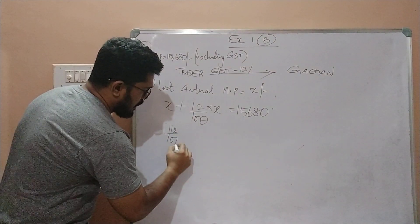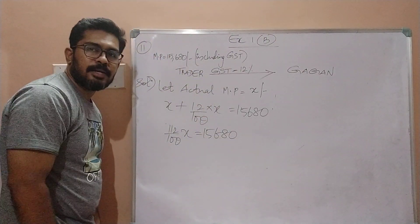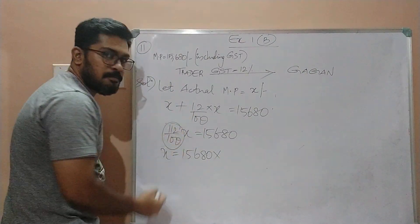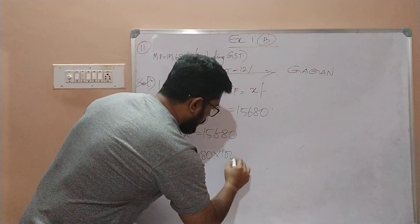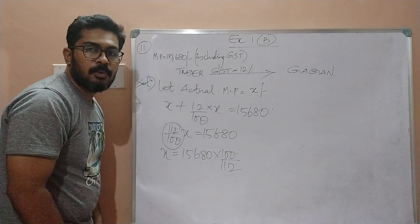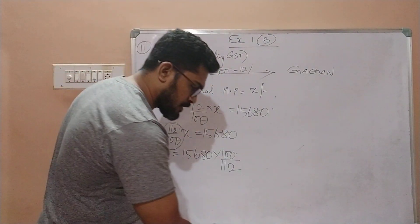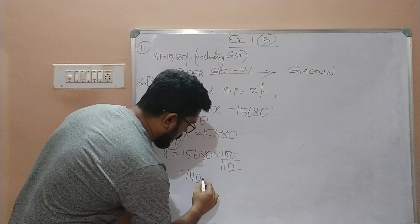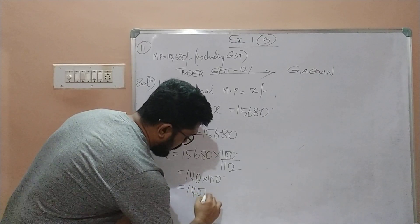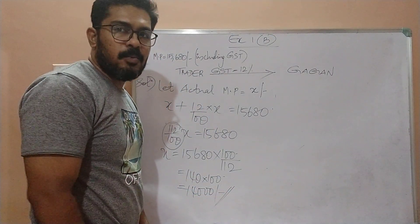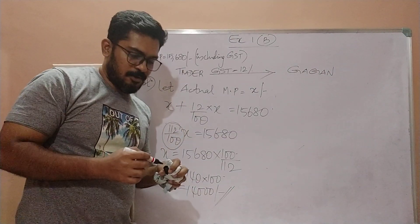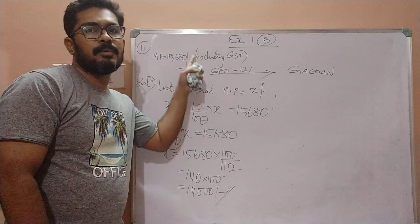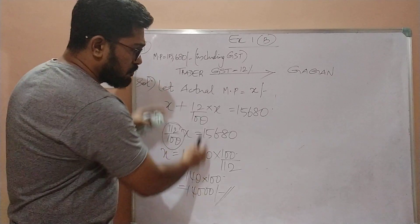So the equation is: X plus 12/100 of X equals 15,680, which gives us 112/100 of X equals 15,680. Solving: X equals 15,680 into 100/112. That gives 15,680 divided by 112 equals 140, and 140 into 100 equals 14,000 rupees. So the actual market price of the refrigerator is 14,000 rupees, because adding 12% GST on 14,000 gives 15,680.